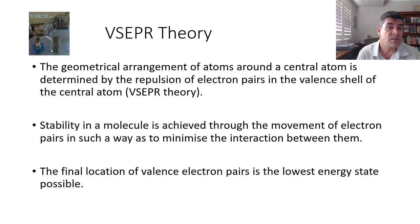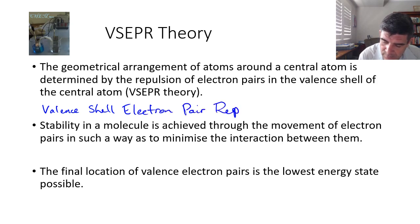What are some of the key things that help affect the geometry or the arrangement in space of the electrons around the central atom? There's a particular theory that we can use to help us understand, and it's called the Valence Shell Electron Pair Repulsion theory, or VSEPR for short.